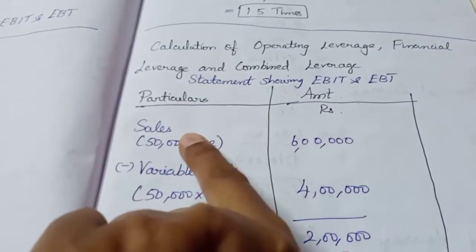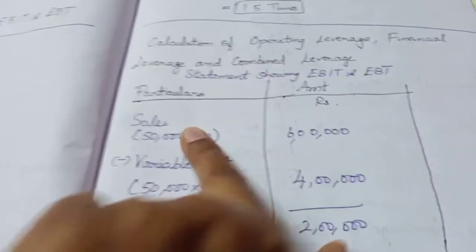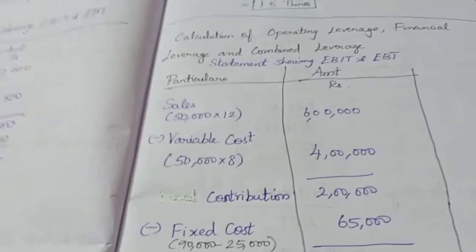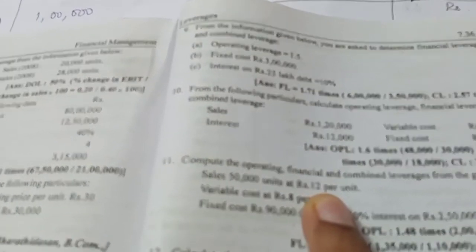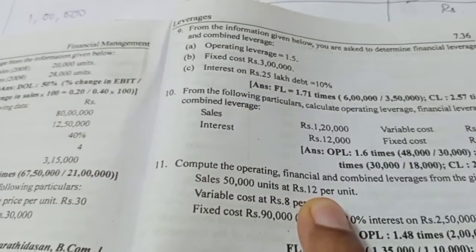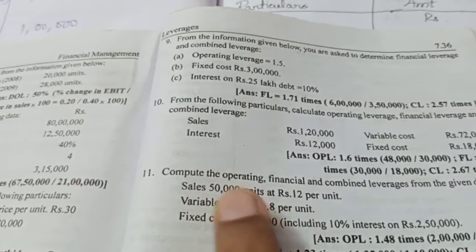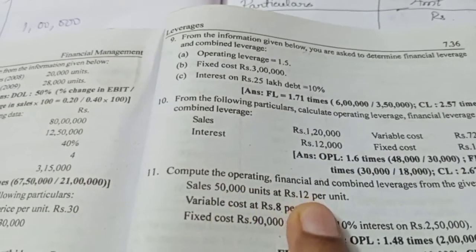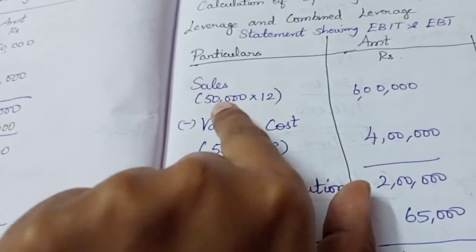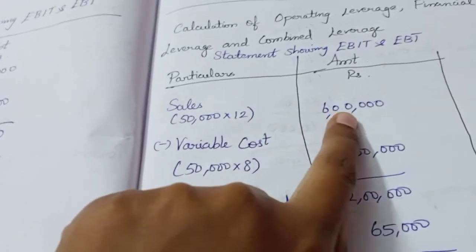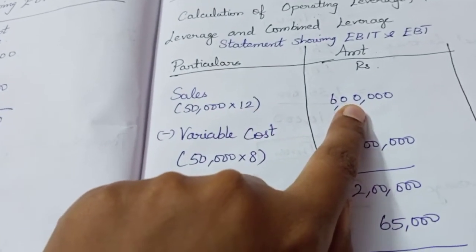First, we calculate Sales. As usual, we multiply units by selling price per unit. 50,000 units into Rs. 12 per unit gives us 6,00,000.